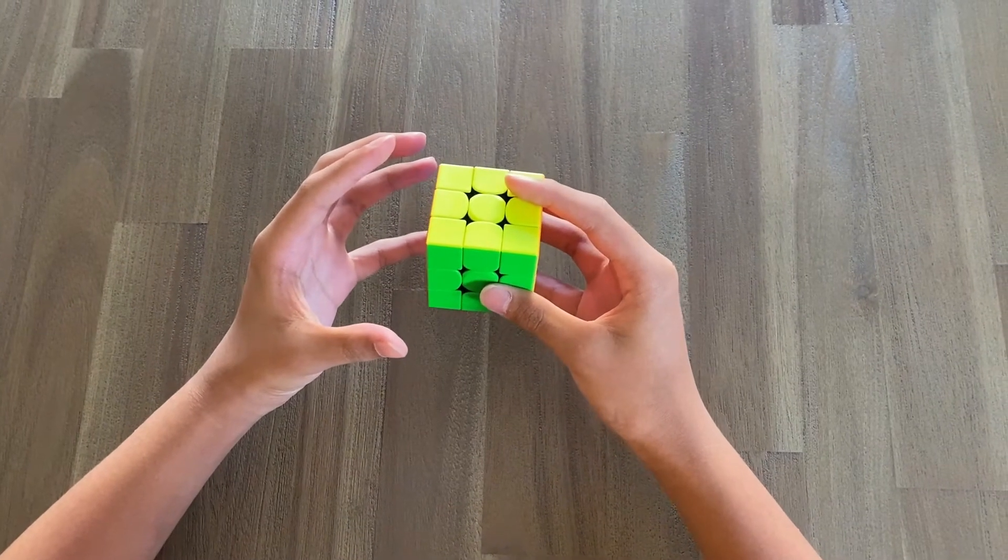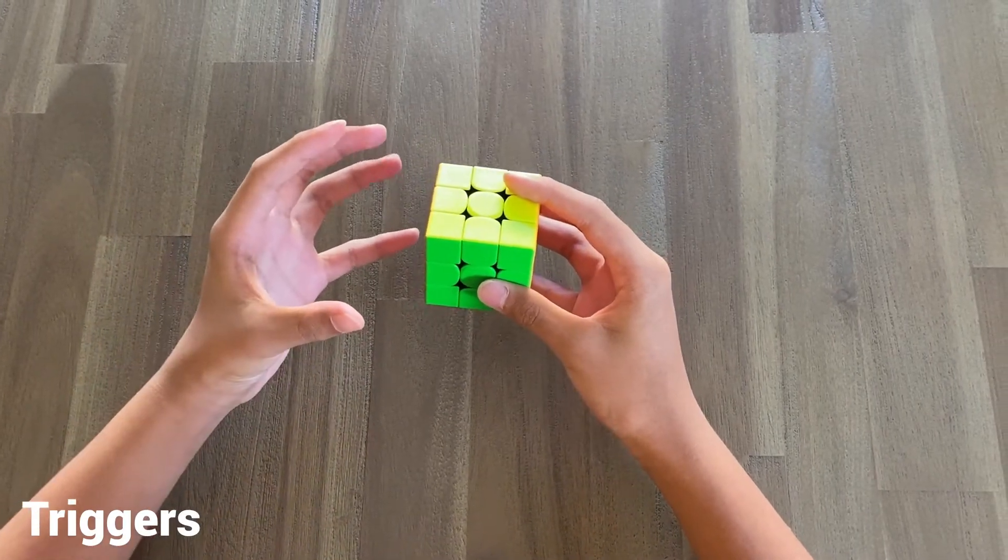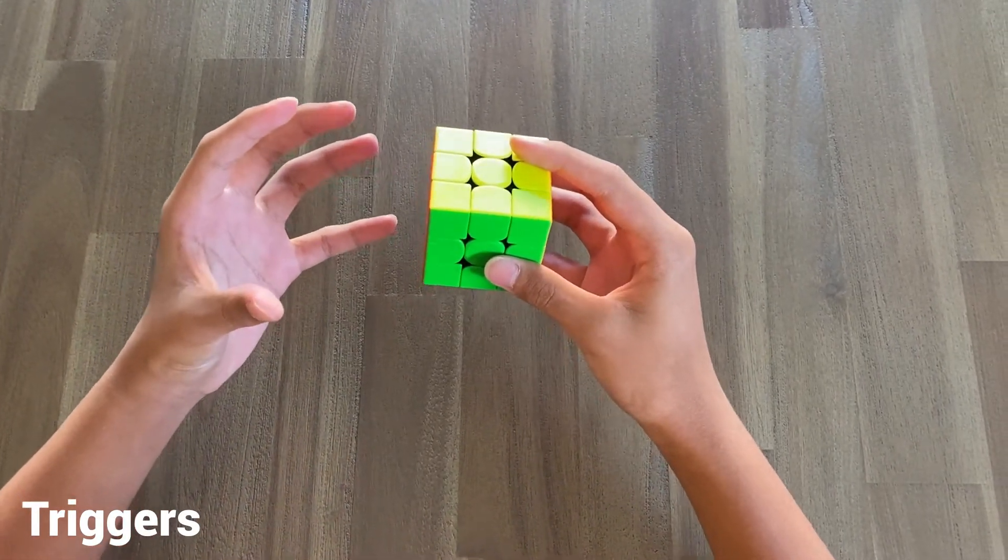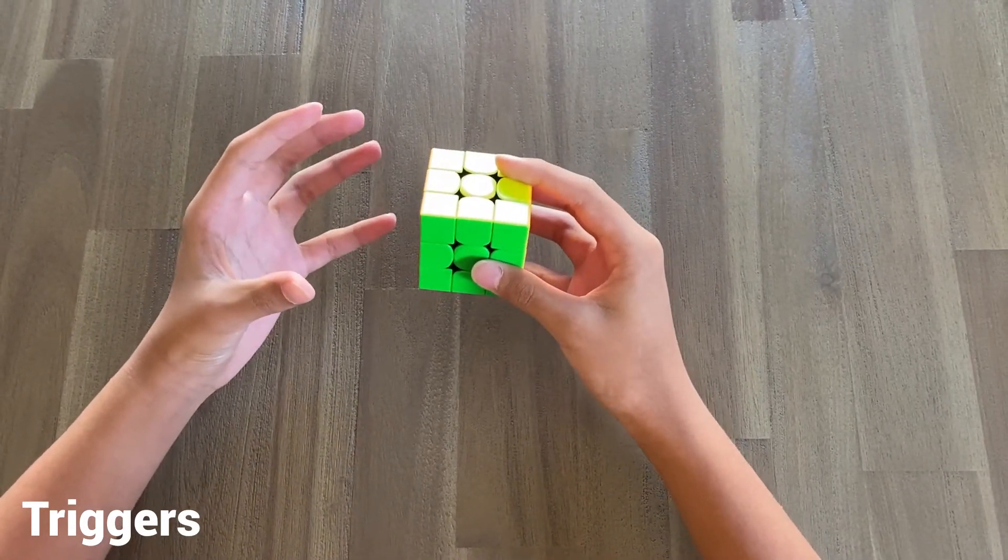The first and most important thing I want to talk about are triggers. What triggers are, they're technically a subset of algorithms. They're a small group of notation that help you memorize larger algorithms easier.